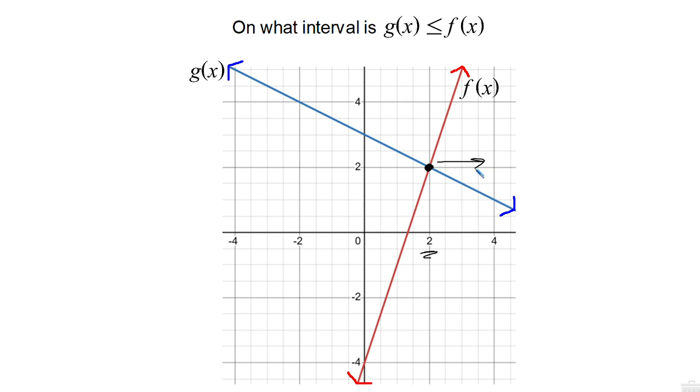Right, where the blue one is below the red one. So our interval should just be from 2 to infinity. The 2 is going to have a bracket on it because this is an or equal to. And we could just say x is greater than or equal to 2, because those are the values of x that are greater than or equal to 2, the ones to the right of 2.